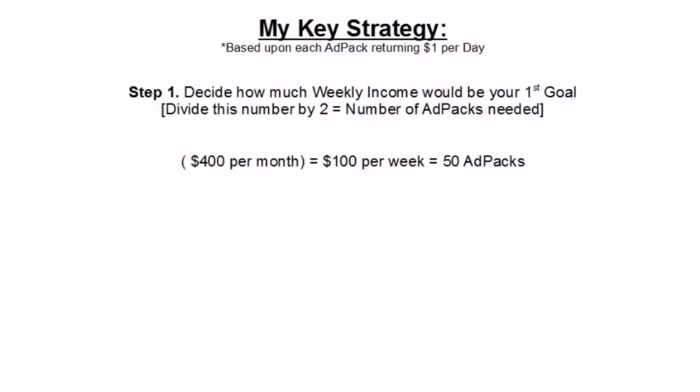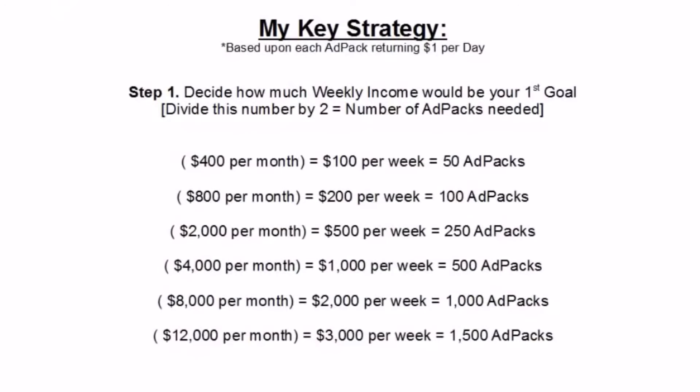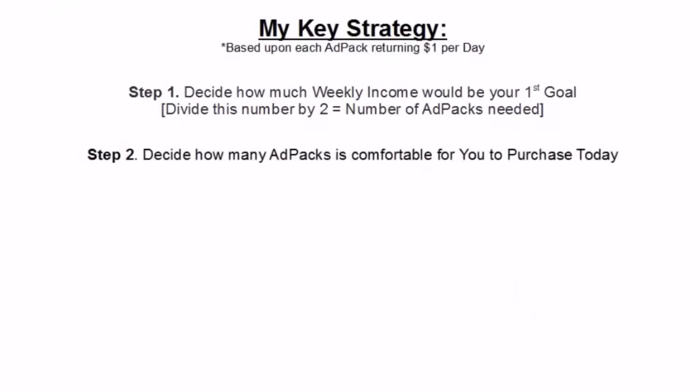Let's assume that you would like to earn $400 per month, or $100 per week. We divide the $100 per week by two and that gives you 50 ad packs — this would be your first goal. As you can see from this page, depending on how much you want to earn per month, just break it down into weeks and then into ad packs to give you a target to aim for. Step two: decide how many ad packs is comfortable for you to purchase today. Remember, you don't have to buy 100 packs today. You could buy 10 today and then continue to repurchase additional ad packs generated through the profits in your back office.